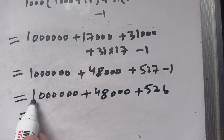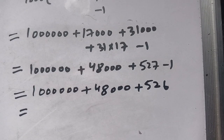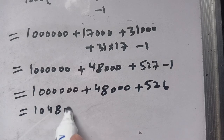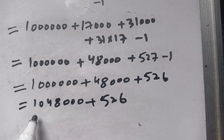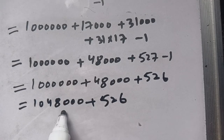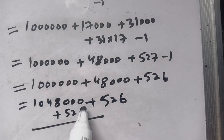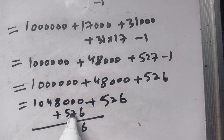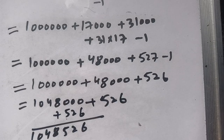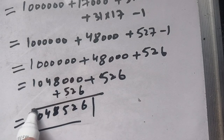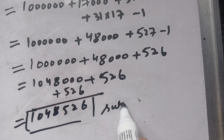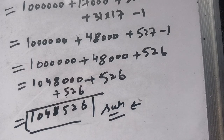Adding it all together: 1 million plus 48,000 plus 526 — 6 plus 0 is 6, 2 plus 0 is 2, 5 plus 0 is 5, giving 840,526... thus our final answer is 1,048,526 without using any calculator. If you're new here, make sure to subscribe to our channel for more informative videos. See you in the next video, till then bye!